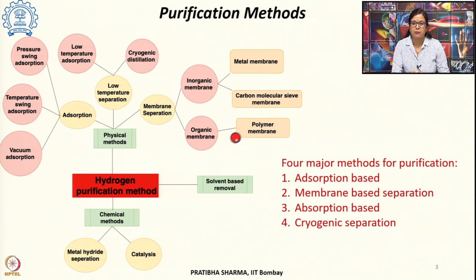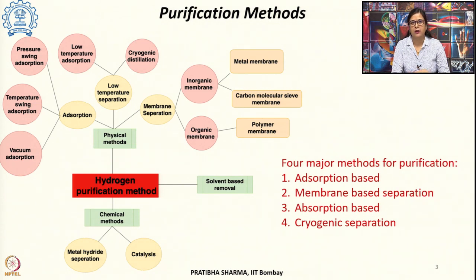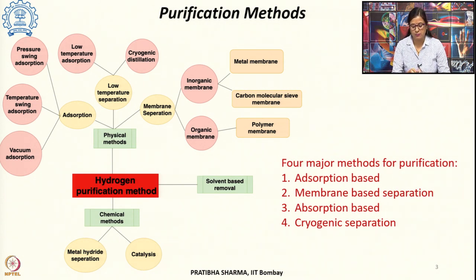Organic membranes can be polymer membranes. There could be solvent-based removal methods. Among chemical hydrides, either metal hydrides can be used for purification of hydrogen or another route which is catalysis. We will now look in more detail about each of these methods.